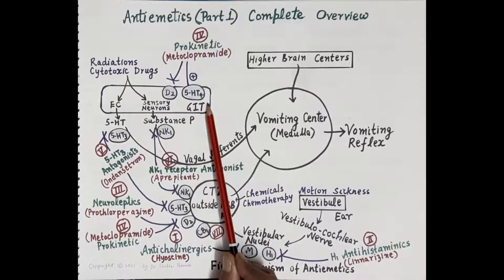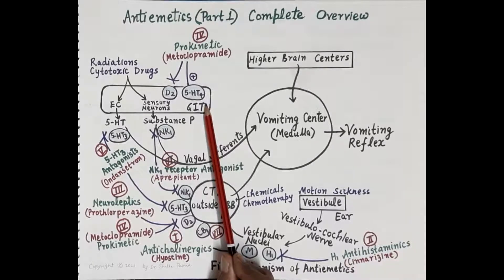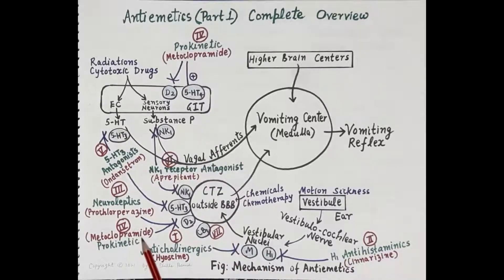Metoclopramide's D2 receptor antagonistic effect and 5-HT4 agonistic action produce its prokinetic effect. Thus metoclopramide is useful in gastroparesis (delayed gastric emptying) and also in gastroesophageal reflux disease. Even though metoclopramide is a broad-spectrum antiemetic, it is not the first-choice drug due to extrapyramidal side effects.